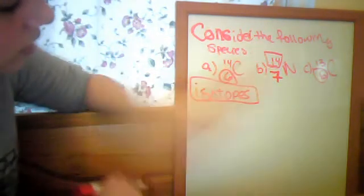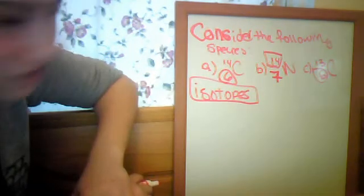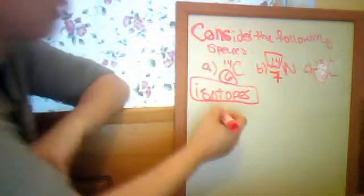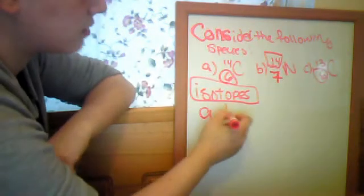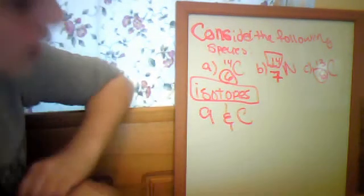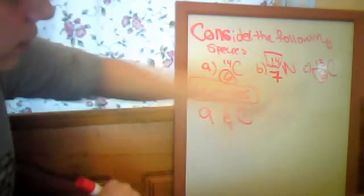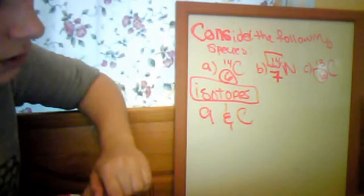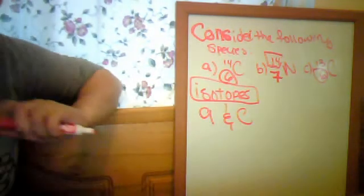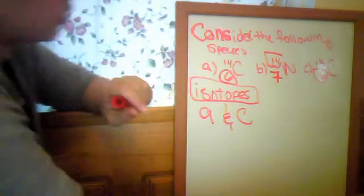So 14, we got less neutrons, so we got 13, so carbon. So A and C are isotopes. And if I look at nitrogen, nitrogen, we got 14 atomic mass and 7 atomic numbers, so it's not an isotope. Next question.